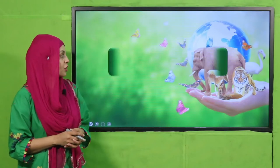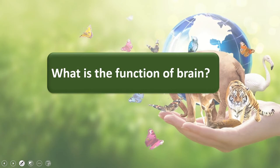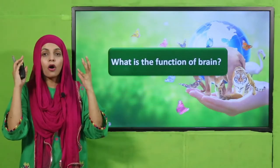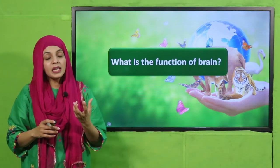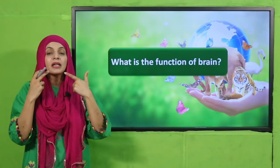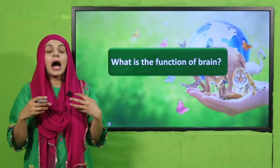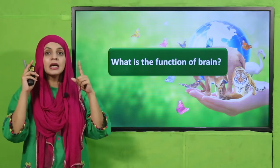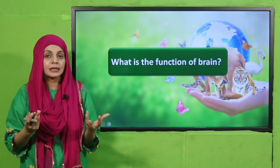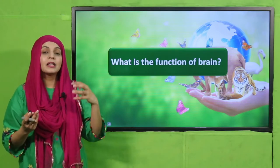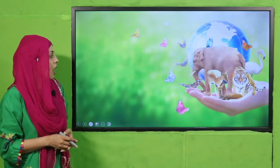Pre-reading question: What is the function of the brain? The brain is the controlling organ of your body. If I want to move my hand or speak, my brain gives orders to my tongue or different body parts to perform that activity. Without signals from the brain, you cannot perform any function.